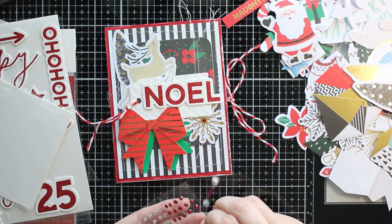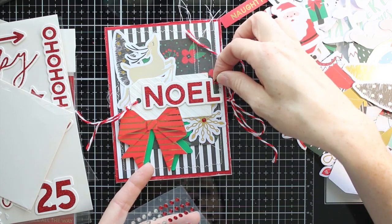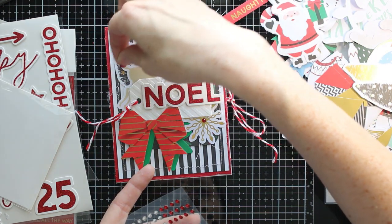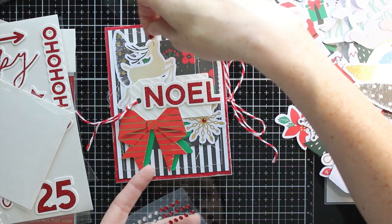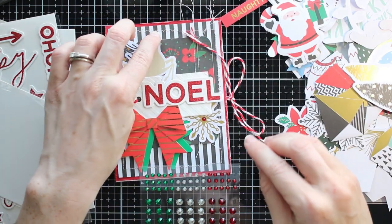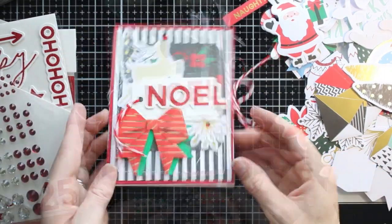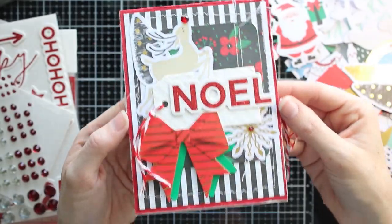I'm also taking some of this bling from the kit, adding it to the front. I was trying to decide where to add this one and then I thought, oh, it's a reindeer. Put it on the nose and make a Rudolph, right? So I thought that was really cute. And that's the front of my album. So super simple to load it up with all the cute things.